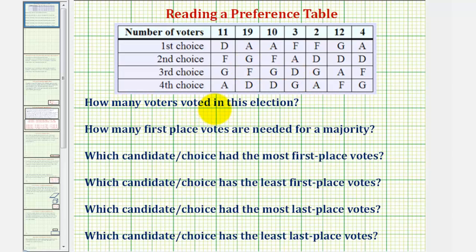First question is how many voters voted in this election, which would be the sum of this first row. So we have 11 plus 19 plus 10 plus 3 plus 2 plus 12 plus 4, which is equal to 61. So a total of 61 voters voted in this election.